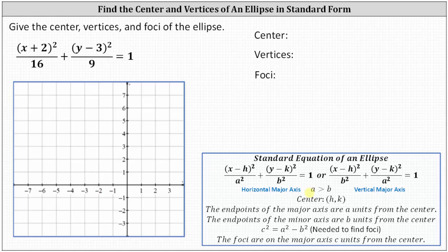If the larger denominator is under the x part of the equation, we have a horizontal major axis. If the larger denominator is under the y part, we have a vertical major axis. The center is the ordered pair h comma k. The endpoints of the major axis are a units from the center, and the endpoints of the minor axis are b units from the center. Before we find the foci, we have to find c using the equation c squared equals a squared minus b squared. The foci are on the major axis, c units from the center.